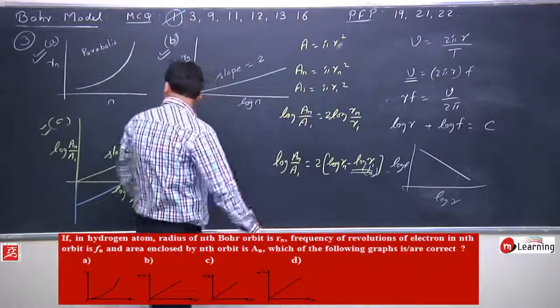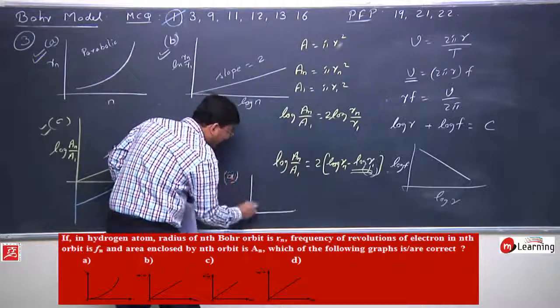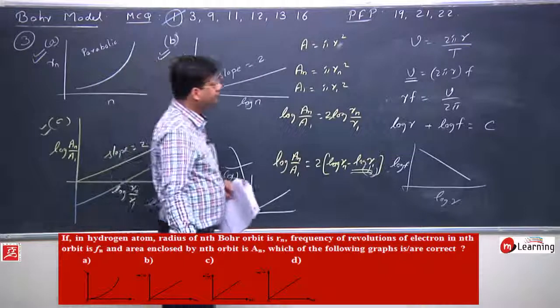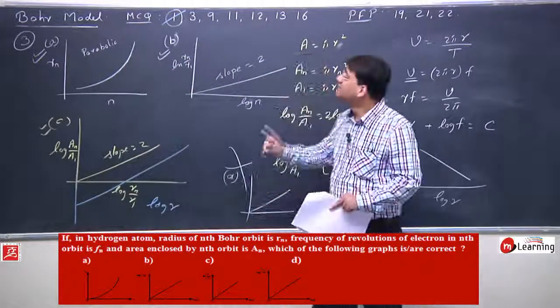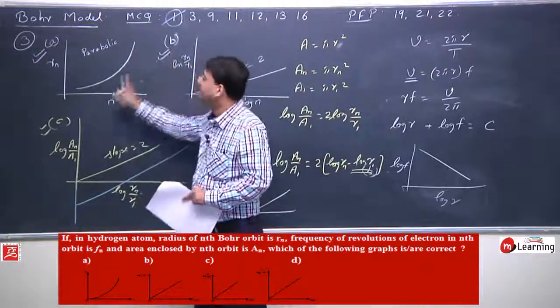I will say log r plus log f equals log of v by 2 pi, that would be a constant. Now if one plots log f versus log r, then the graph should be like this. Whereas in d, they have made it like this. Hence the correct answer is a, b, and c.